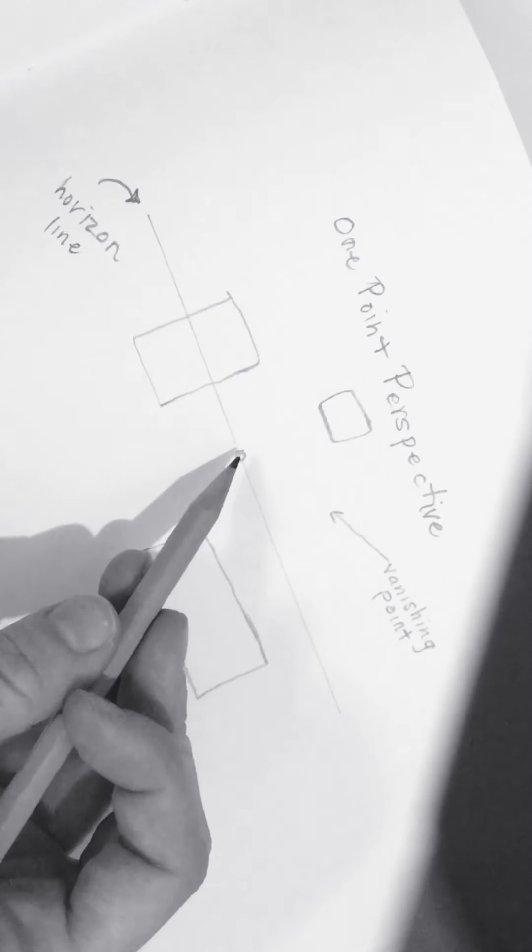Right now, we already established in class that this is just a shape. There is no three-dimensional substance to this. Now, in order to make it something that's three-dimensional, we actually need to use a ruler to connect each of our corners on our shapes to our vanishing point.